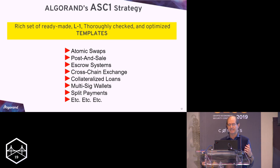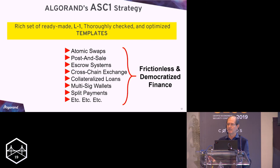By the way, that is a little bit of ASC1, Algorand smart contracts at layer one strategy, is to have a rich set of ready-made, thoroughly checked and optimized templates from which most probably you find what you want to do. And if you don't find it, it is much easier to put together two pieces to do the thing that you really want to do rather than starting hiring somebody to do a smart contract and good luck. And I believe that things like this are really what are going to power frictionless and democratized finance.